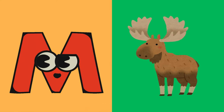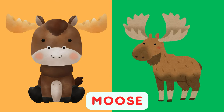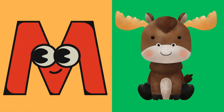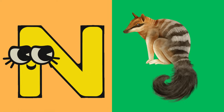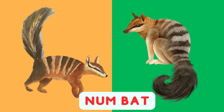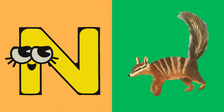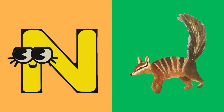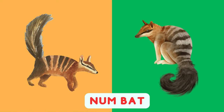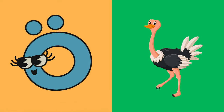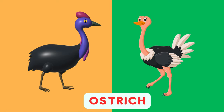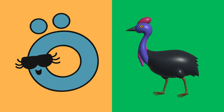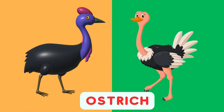M is for Moose, M, M, Moose. M is for Moose, M, M, M. N is for Numbat, N, N, Numbat. N is for Numbat, N, N, N. O is for Ostrich, O, O, Ostrich. O is for Ostrich, O, O.